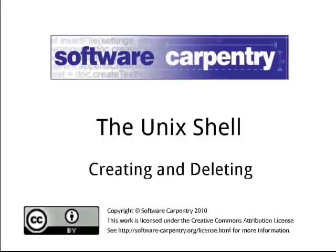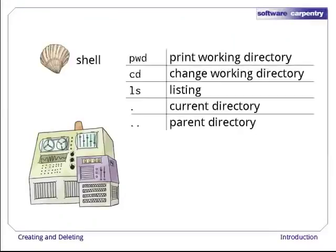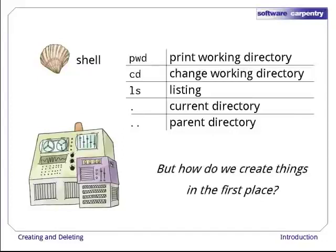Hello and welcome to the third episode of the Software Carpentry Lecture on the Unix Shell. In this episode, we'll see how to create, rename, copy, and delete files and directories. As we've seen in previous episodes, one way to interact with a computer is through a command line shell. When we type in commands, the shell finds the corresponding programs, runs them on our behalf, and shows us their output. But how do we create files and directories for it to show us?